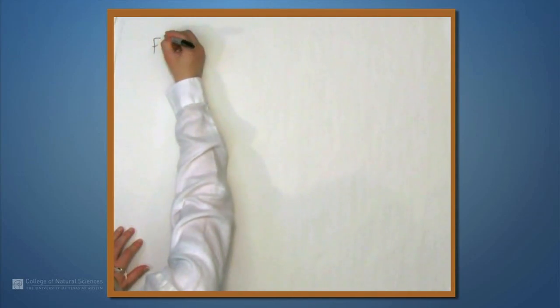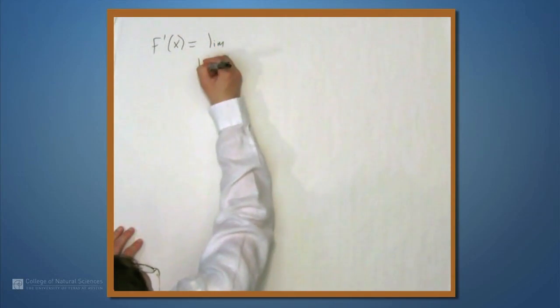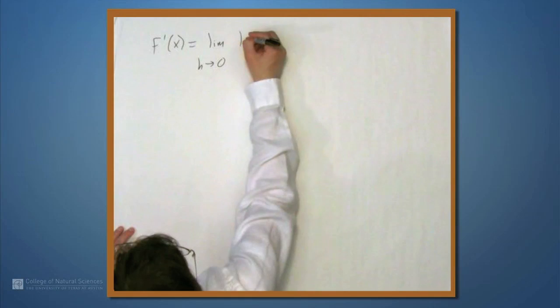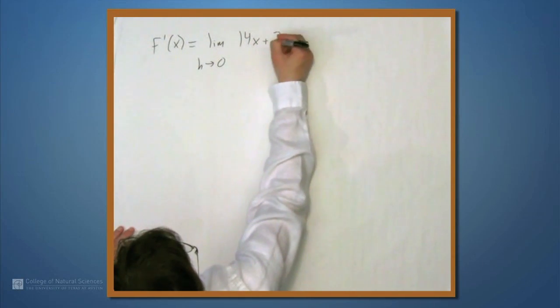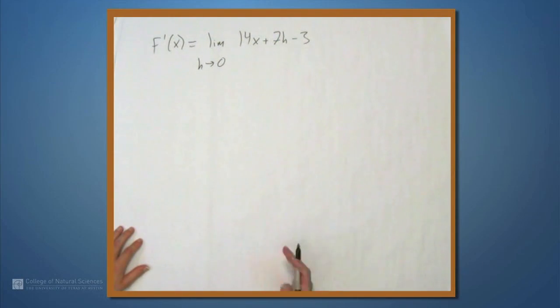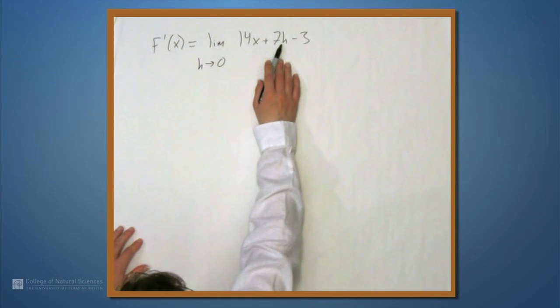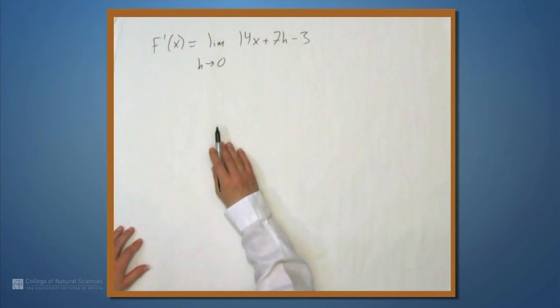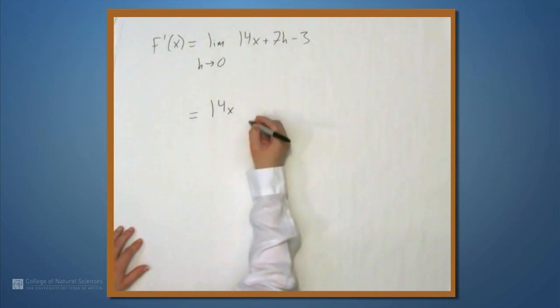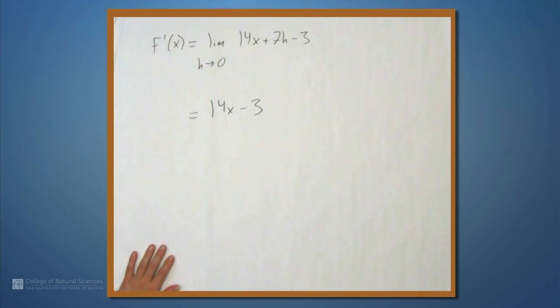f prime of x is, by definition, the limit as h approaches 0 of the expression that we just got, which is 14x plus 7h minus 3. But what happens here? As h goes to 0, this 14x is untouched. The 7h goes to 0 and the minus 3 is untouched. So this is 14x minus 3. And that's how you compute the derivative by definition.